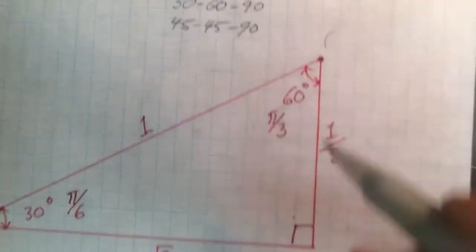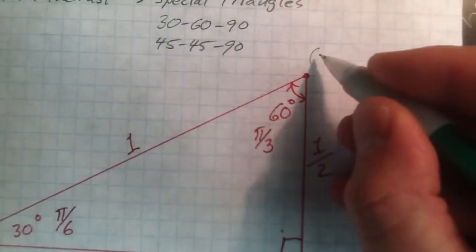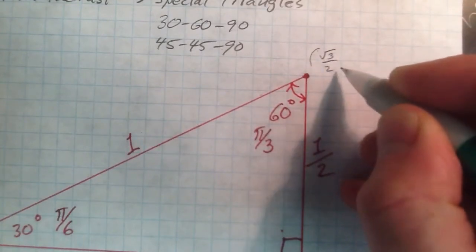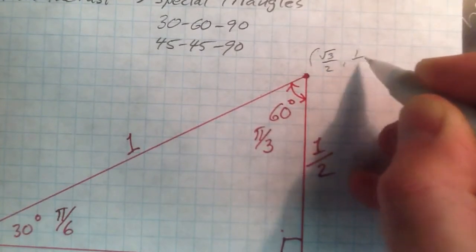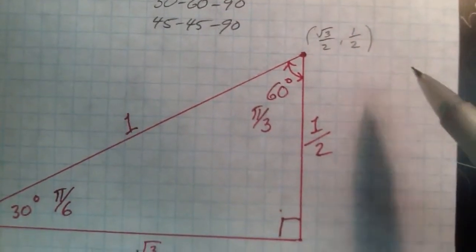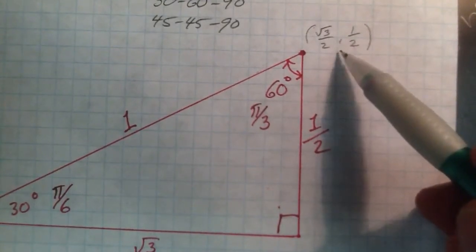So if I was to put this triangle in a coordinate system, its x-coordinate would be √3 over 2 because that's the side adjacent, and this then is a hypotenuse. Another little trick that you want to know, whenever you see an ordered pair,